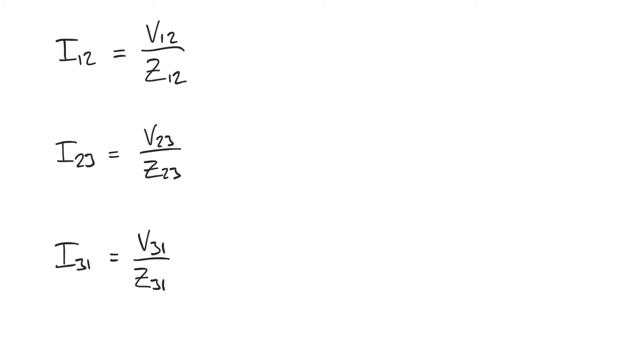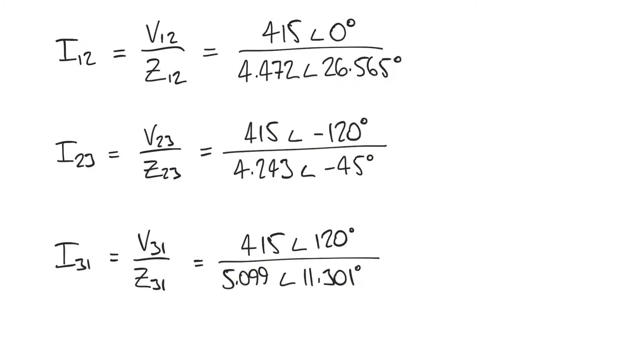Dividing in polar form is much easier which is part of the reason why we've converted here. Our voltages are already given to us in polar form and so we can just substitute these values in, remembering that when we divide in polar form we divide the magnitudes and we subtract the angles. Just watch out for double negatives when we're subtracting a negative. So here we have 0 minus 26.565 degrees which would give us minus 26.565 degrees, but here we'd have minus 120 minus minus 45, so watching out for that double negative we'll get a result of minus 75 degrees in the case of I23. And the magnitudes here are just dividing the magnitudes of each.